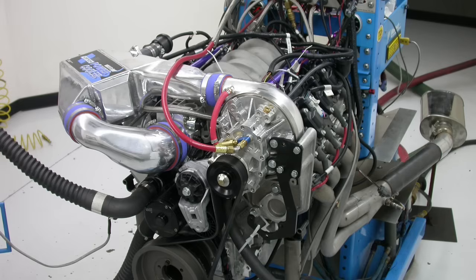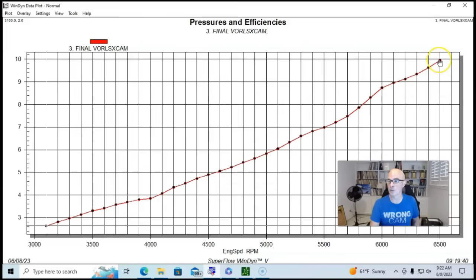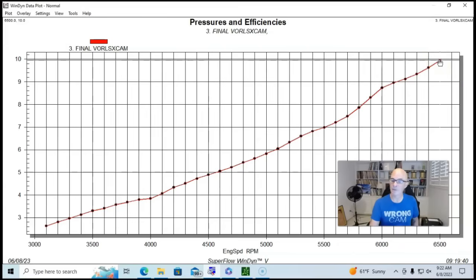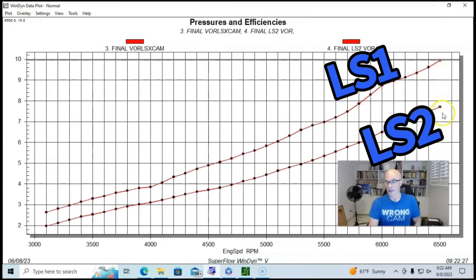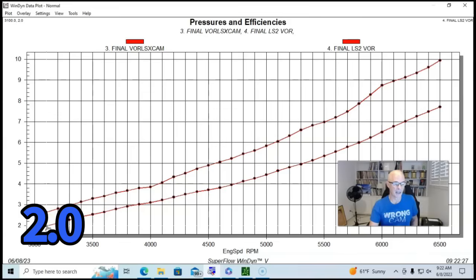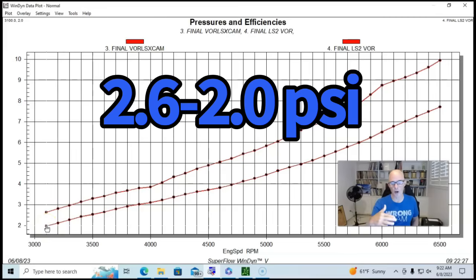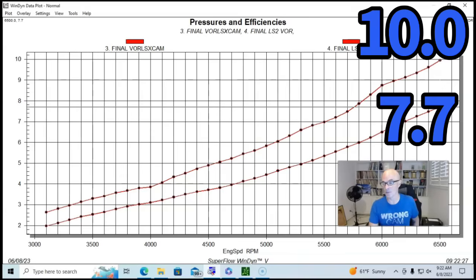Predictably, the boost pressure went down when we went up in displacement and power. Here's the boost curve on our cam and Vortex Supercharged LS1. We started out at 2.6 psi down here at 3,100 rpm, and it rose steadily to a peak of 10 pounds out here at 6,500. And you can see the boost curve is actually still climbing, just like the horsepower curve. It would have continued to make more power had we run it out higher than 6,500 rpm.